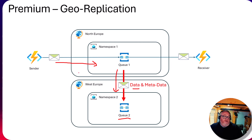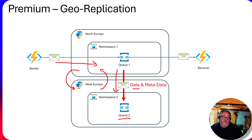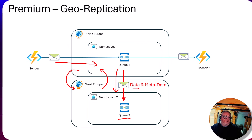In a failover scenario, I can flip the switch from namespace one to namespace two, and my sender and receiver don't have to change - they keep talking to the same domain name, which just moves to the other namespace. I can then flip the switch back, which wasn't possible with the Geo Disaster Recovery option. This gives a much richer geo-replication solution and removes all the overhead from the sender and receiver.